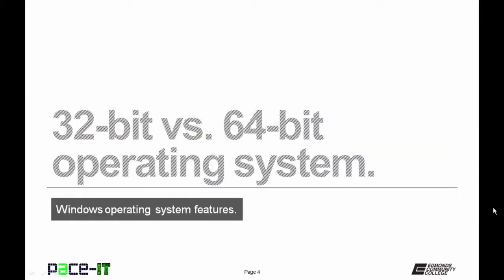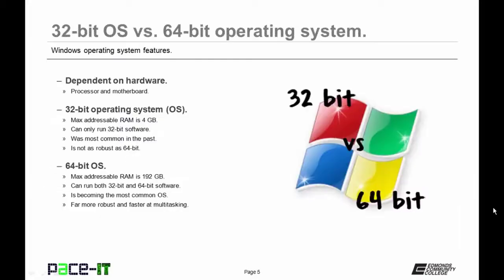We're going to begin with 32-bit versus 64-bit operating systems, and a lot of this is dependent upon the hardware that you have. If you have a 64-bit processor, then you can install either a 32-bit or 64-bit OS. But if you only have a 32-bit processor, you only get a 32-bit operating system.